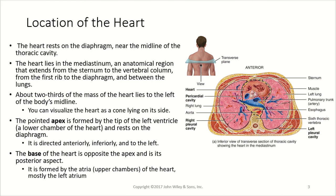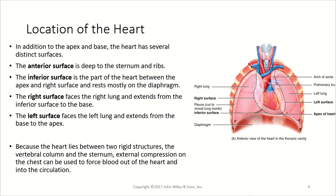You can visualize this by thinking about a cone lying on its side. The pointed apex of the heart is going to be formed by the tip of the left ventricle, which is the lower chamber of the heart. It rests on the diaphragm and is directed anteriorly, inferiorly, and to the left. The base of the heart is going to be opposite the apex, and is the posterior aspect of the heart.